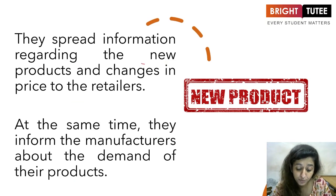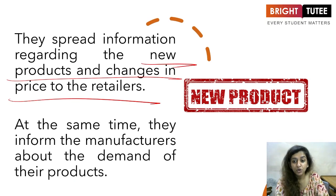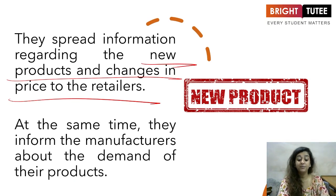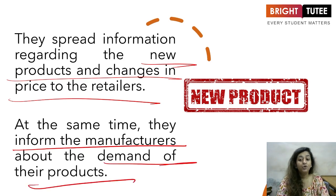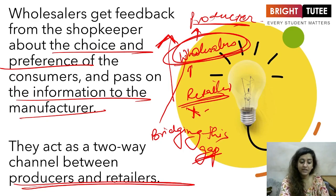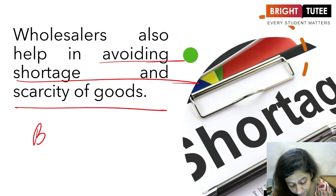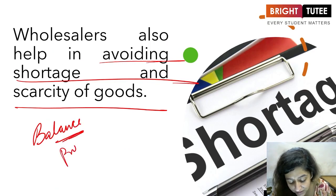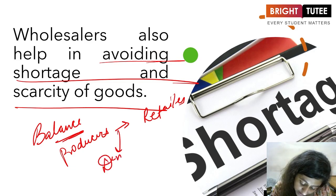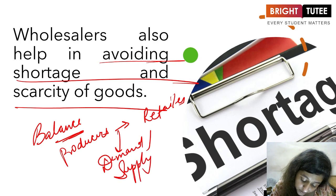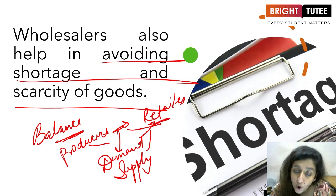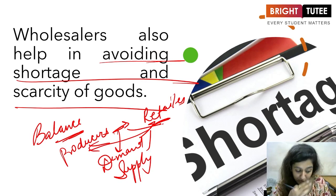Wholesalers spread information regarding new products and changes in price to the retailers. If a new product is launched or a price change occurs, they inform the retailers. At the same time, they inform manufacturers about the demand for their products, helping to avoid shortage or scarcity of goods by maintaining the demand and supply chain between producers and retailers.